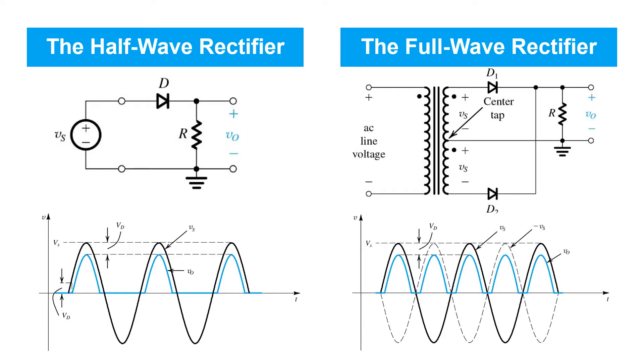You may recall the half-wave rectifier on the left, which is nice and simple, requires only one diode, but on the other hand, it only rectifies the positive half-cycles of the input sinusoid.